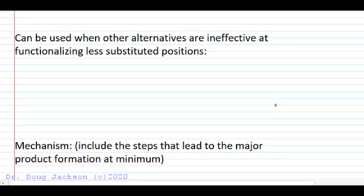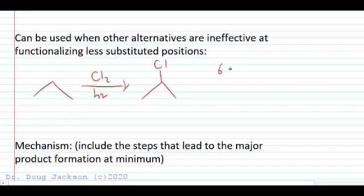Well, when other alternatives prove ineffective at functionalizing this position. So if we take a look at propane and we halogenate this with chlorine and light, the major product, if we do the calculation, comes out to be the secondary alkyl halide because we've got six ways to make the primary times odds of one versus two ways times odds of 3.8 for that reaction. And that gives us 7.6 versus six total.